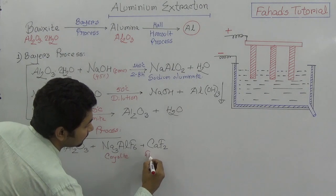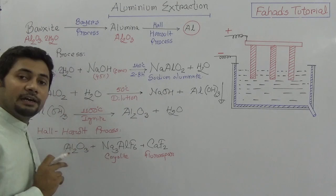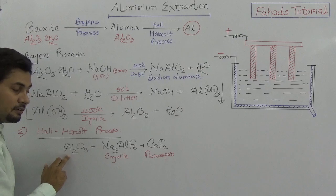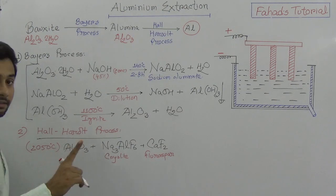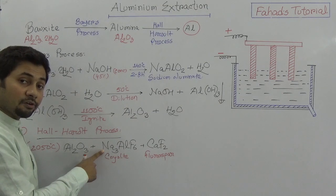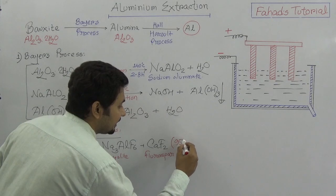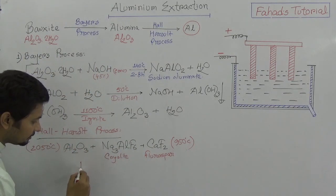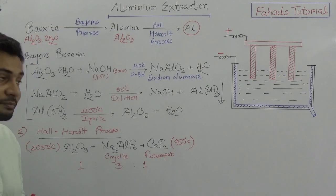Cryolite (Na₃AlF₆) is sodium hexafluoroaluminate, and fluorspar is calcium fluoride (CaF₂). Their function is to lower the melting point of aluminium oxide from 2050°C down to around 950°C, making the process feasible. These compounds are mixed with alumina in a 1:2:3:2:1 ratio, making the Hall-Héroult electrolysis process effective.